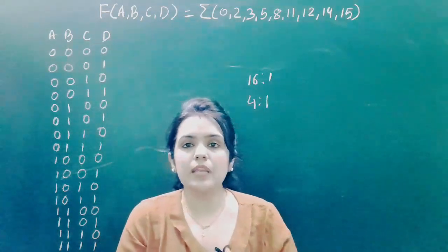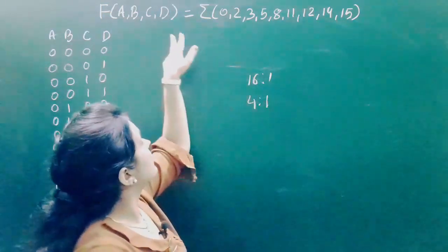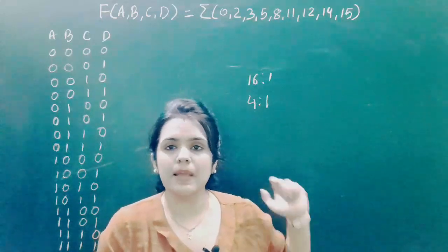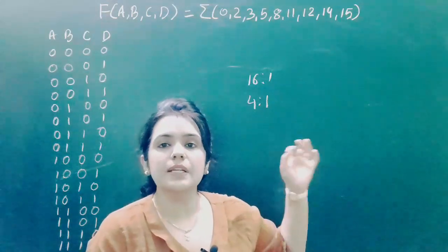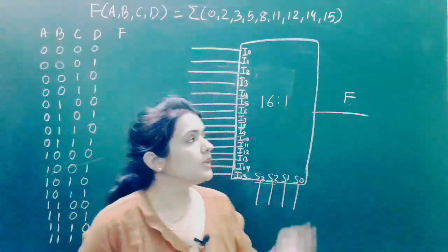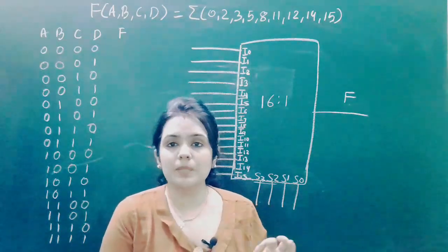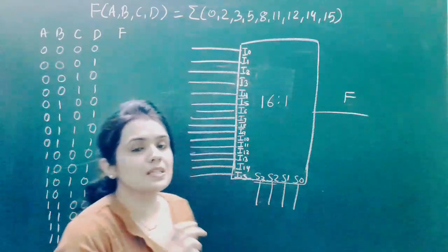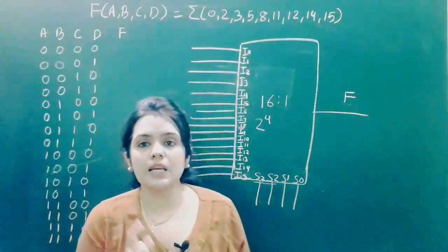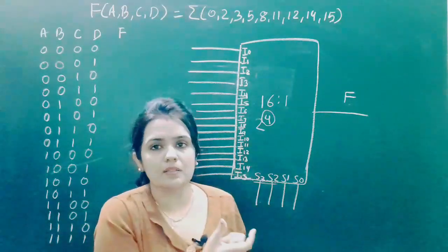Today we will see how to implement this 4-variable Boolean function using 16-to-1 and 4-to-1 multiplexers, as we have already seen the 8-to-1 implementation. Now, suppose we have to implement this Boolean function using a 16-to-1 multiplexer. Since 16 = 2^4, the number of selection lines will be 4.